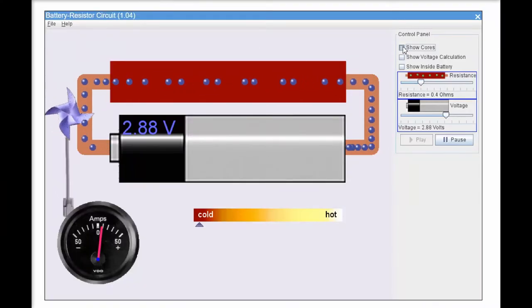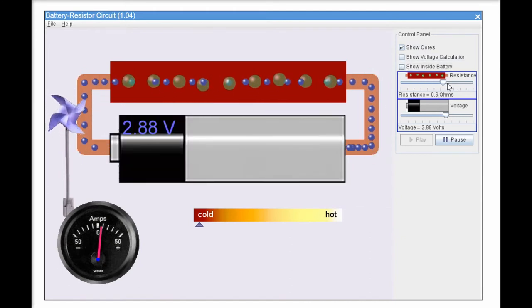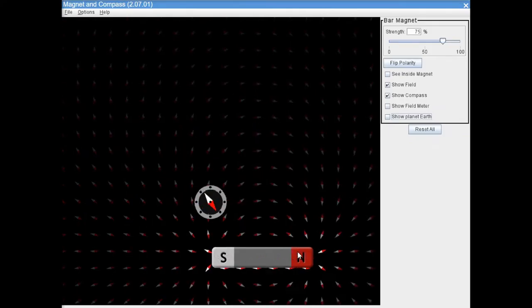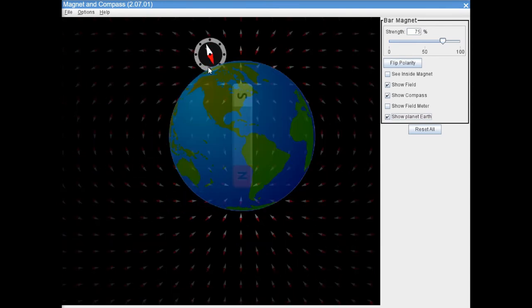Heating effects of electric current are explained with this simulation. As you know, Earth is a giant magnet. Explore how compass orients itself at various locations on the planet.